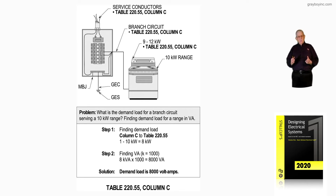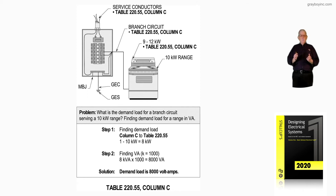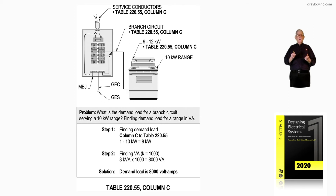This was a proposal stating that VA is more accurate than KW, because where there is strictly resistance, more values make up a circuit — such as capacitive reactance, inductive reactance, and all that kind of thing. So step two is just taking the KW and making it KVA, then multiplying by 1,000 to get the VA rating of 8,000 VA. So the answer for the demand load from Column C of Table 220.55 is 8,000 VA.